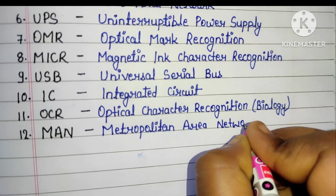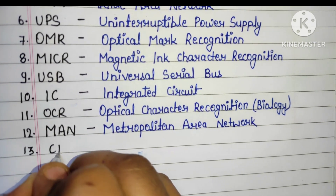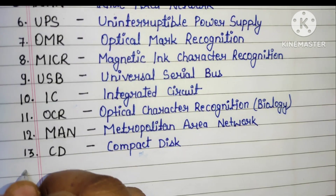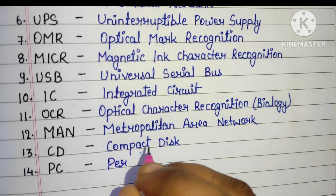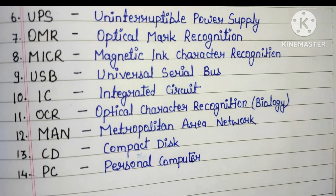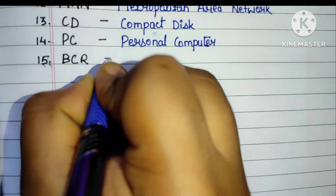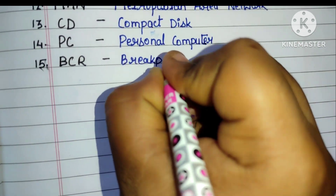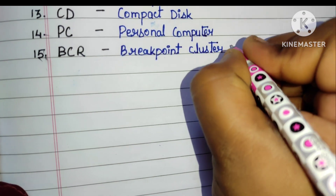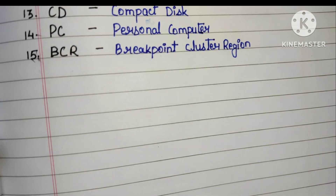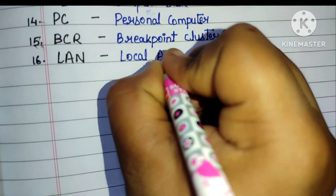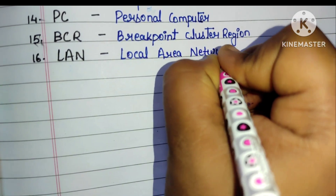Twelve: MAN - Metropolitan Area Network. Thirteen: CD - Compact Disc. Fourteen: PC - Personal Computer. Fifteen/Sixteen: LAN - Local Area Network.